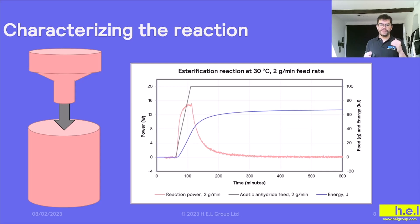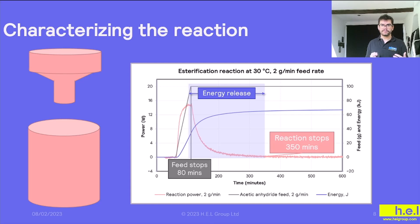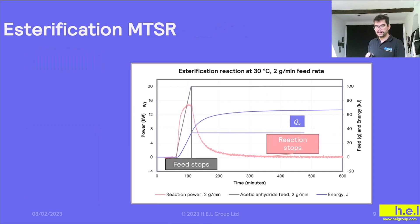So if we look at the graph we have on the right-hand side, we are going to see that the feed is going to be the gray line, and at some point we're going to stop the feed - in this case at 80 minutes - and we can see that the blue line, which is the energy accumulated in the reactor, is going to carry on accumulating even though we stop the feed, and it's going to carry on accumulating until 350 minutes. So this energy release is going to be very important because it's going to determine what our qx is and what our adiabatic temperature rise is going to be, and we can calculate it as we can see on this other slide.